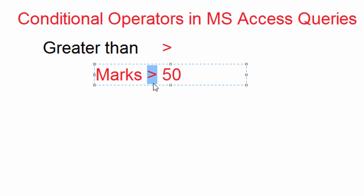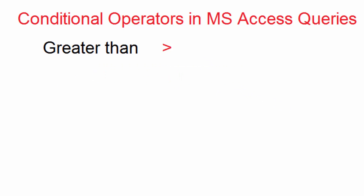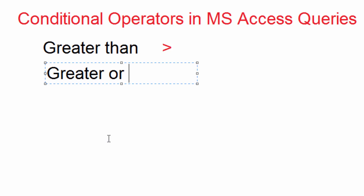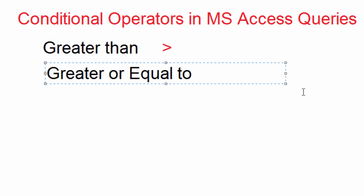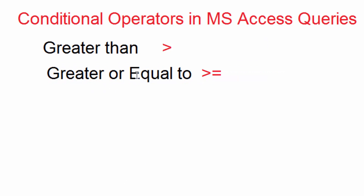Another symbol which is used is greater than or equal to. This one is written with two symbols together following each other: we have the greater than sign then the equal sign — like that. This one is used to check if the first item compared to the second is greater than or equal to a certain value.